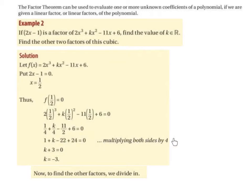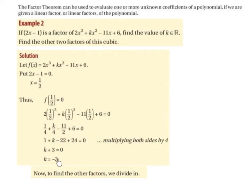We're going to multiply both sides by 4 to get rid of the fractions. A quarter times 4 is 1, k over 4 times 4 is k, minus 11 over 2 times 4 is minus 22, and 6 by 4 is 24. So 1 minus 22 plus 24 is 3, giving k plus 3 equal to 0. Therefore k is equal to minus 3.